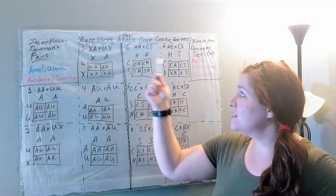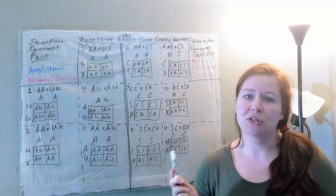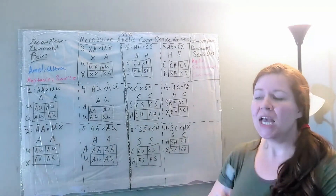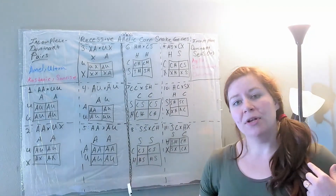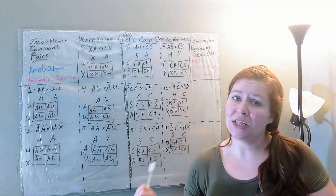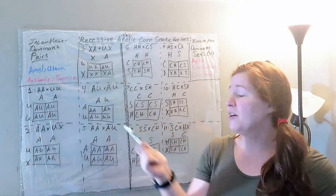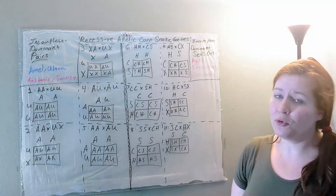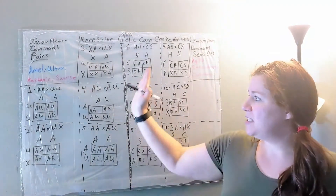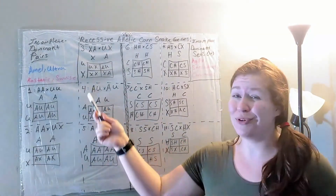Today I'm going to be going over the recessive allelic corn snake gene mutations and how those work when you are doing different breedings. You might notice what's missing is Motley and Stripe — we're going to do those in a different video because they are technically allelic but not incomplete dominant. So we're just going to be going over incomplete dominant pairs and sets with three or more genes.